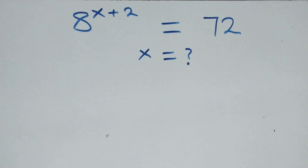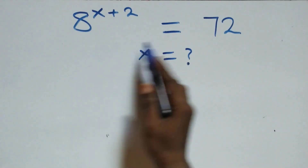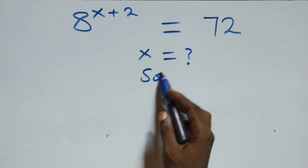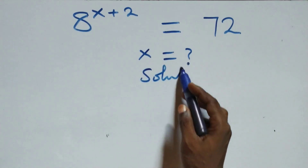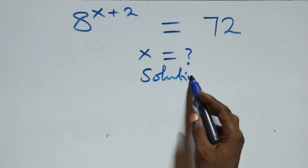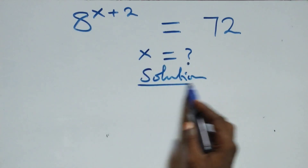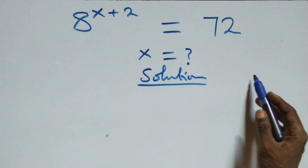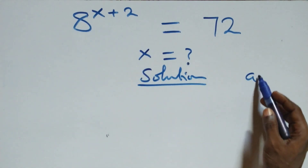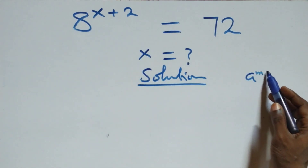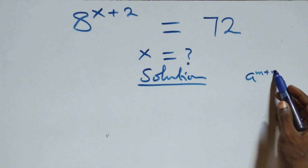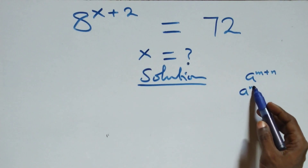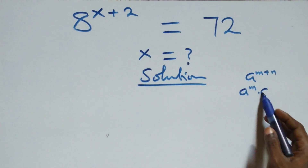How to solve this nice exponential equation. From what we have here, it follows that when we have a raised to power m plus n, it is the same thing as a raised to power m times a raised to power n.